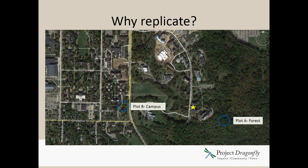If you just stop there with a sample size of essentially one in each of your two plot types, say you find five tree species in the forest and eight in plot B — well, you can't say much at that point. It really could just be a function of what's happening in those two small locations. It may just happen that plot A of the forest is in an area that is mostly maple trees for whatever reason, and the campus plot could just randomly be a higher species richness area.